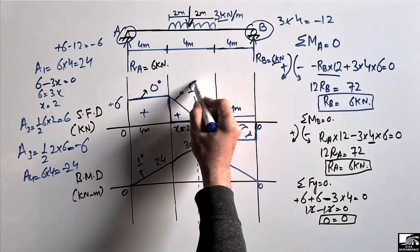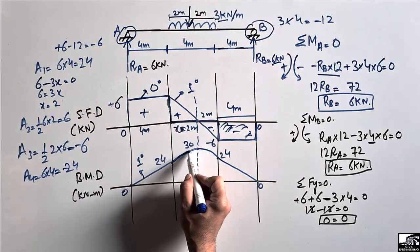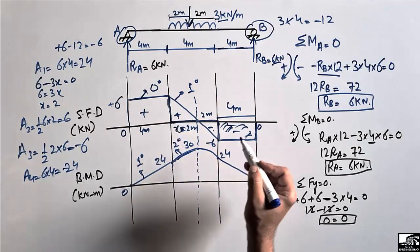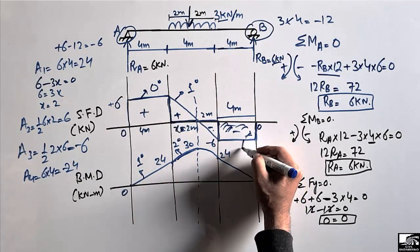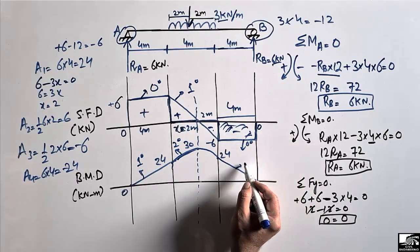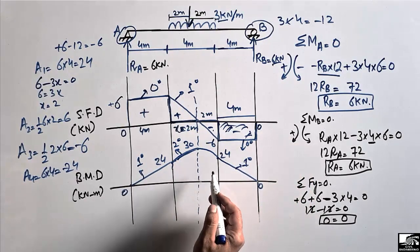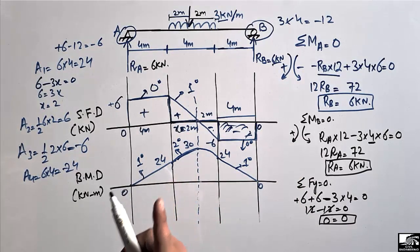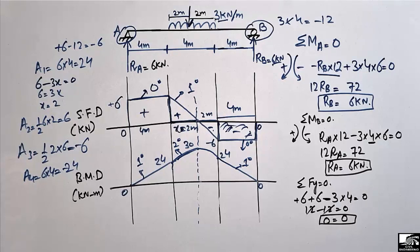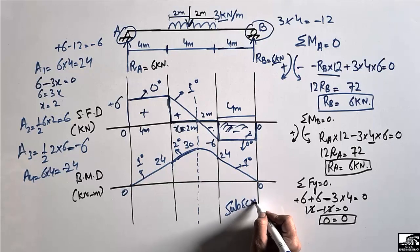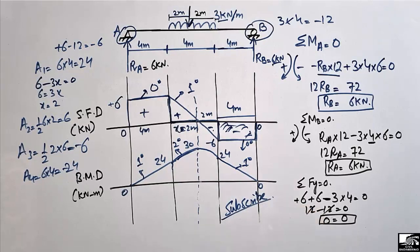In the unloaded regions, the shear force diagram is a zero-degree line (constant), so the bending moment diagram is a first-degree line (linear). In the loaded region, the shear force is first-degree (linear), so the bending moment diagram is second-degree (curved). The bending moment diagram is always one degree higher than the shear force diagram. That covers how to draw the shear force and bending moment diagram — please subscribe for more civil engineering videos.